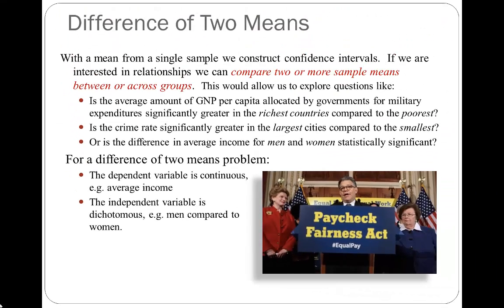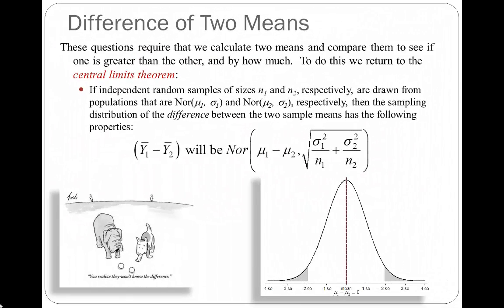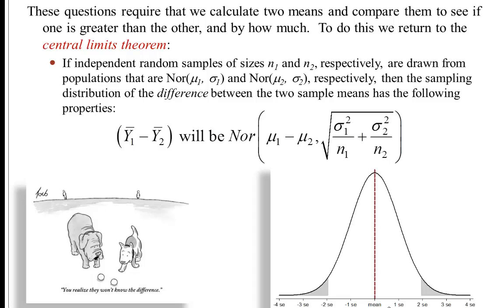Before we do that we have to return to the central limits theorem. There's a corollary to the central limits theorem for single sample means which allows us to analyze the difference of two means. Instead of taking a single sample, calculating a mean, and repeating until we've exhausted all possible samples, we're going to reach into our population and pull out two samples, calculate the average for each sample, and then the difference of the two averages.